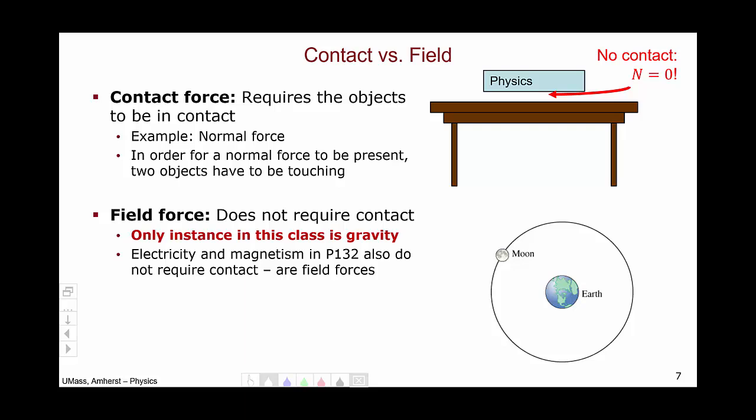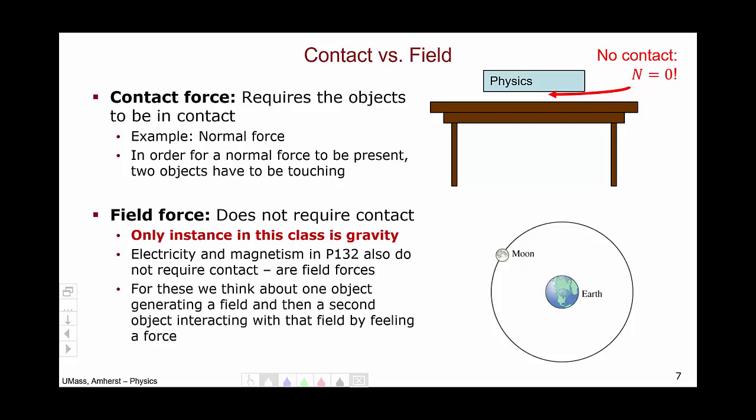In the context of a field force, we think about one object generating a field. In this case, the earth generates a gravitational field that extends beyond the earth out into space. And the second object, in our example the moon, does touch that field.